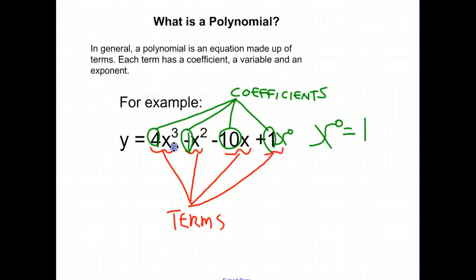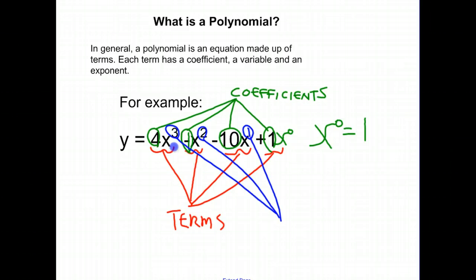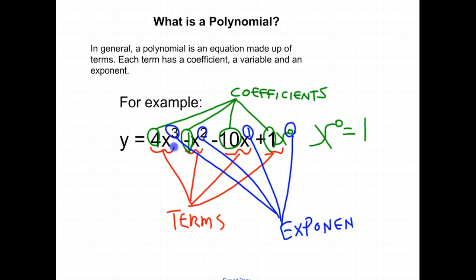The exponents are the superscripts next to the variables. Notice that we have a 3 — x to the 3rd power — and a 2, that's the exponent for this x value, x to the 2nd power, or x squared. In this case, you don't see an exponent in negative 10x, but it could be considered to the 1st power, because x to the 1st power is just x. And if we had x to the 0 next to the constant, 0 would be considered the exponent. Those are all the exponents.